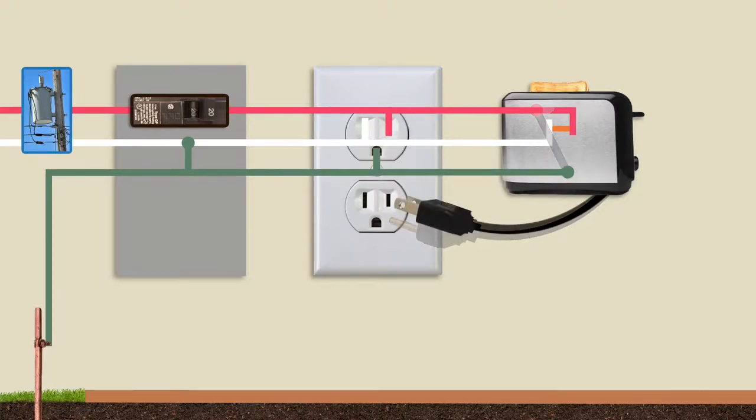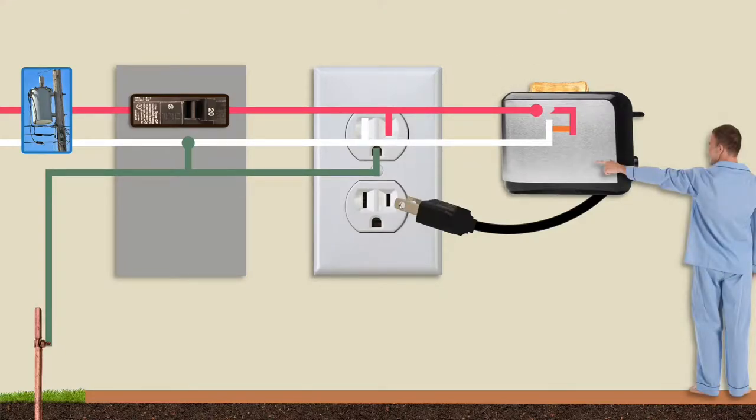With a two-prong plug, no ground connection exists between the metal case and the ground terminal, so if the hotline breaks and touches the case, and a person also touches the case, especially if they're in bare feet or somewhere damp, they'll receive a shock.